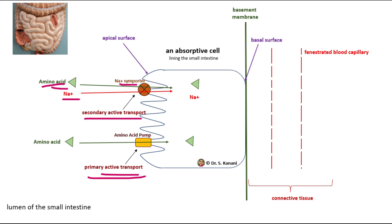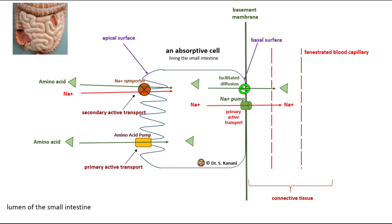Now that we have amino acid molecules and sodium ions inside the absorptive cells, the next step is passing them through the basal surface. On the basal surface of the absorptive cells lining the small intestine, we have transporters for amino acids. These transporter molecules transport amino acids through the basal surface without using ATP — that is facilitated diffusion. So amino acid molecules are absorbed through the basal surface by facilitated diffusion.